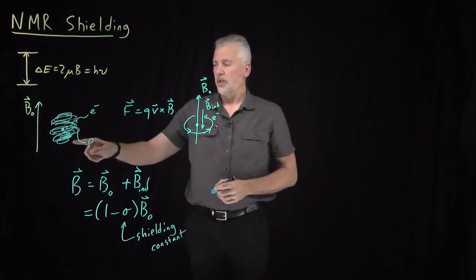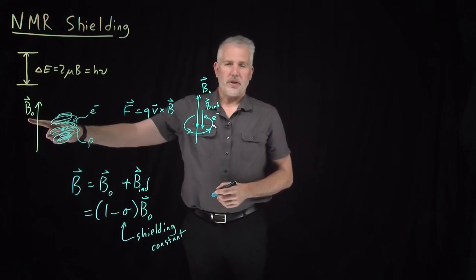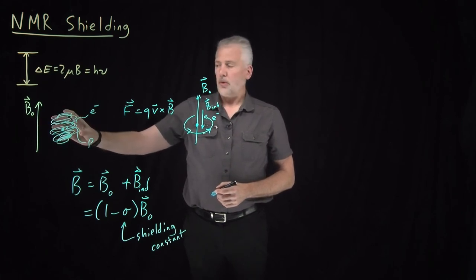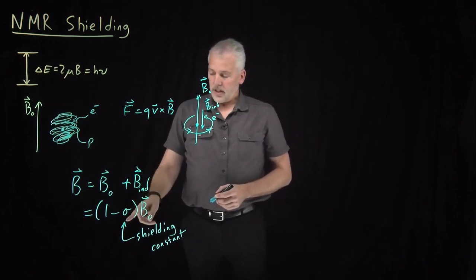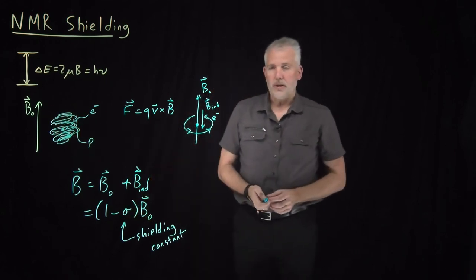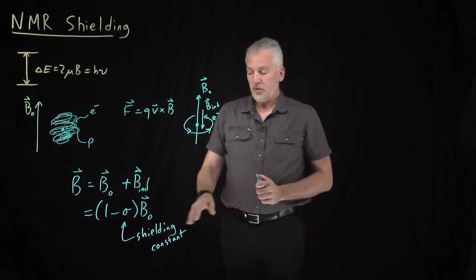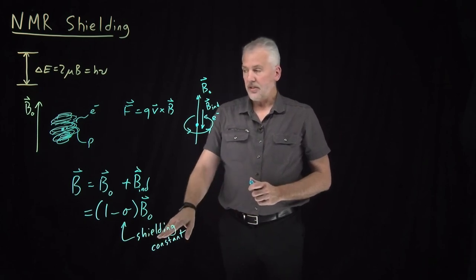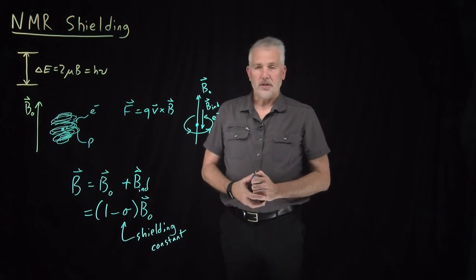Just to summarize, the nucleus doesn't feel the full strength of this magnetic field because the presence of the electron with an opposite charge around it shields it from the full strength of that field. So that shielding constant is relatively small but quite important, and that's going to lead to some of the most important uses of nuclear magnetic resonance, in particular because that shielding constant depends on the chemical environment of the protons in the molecule itself.